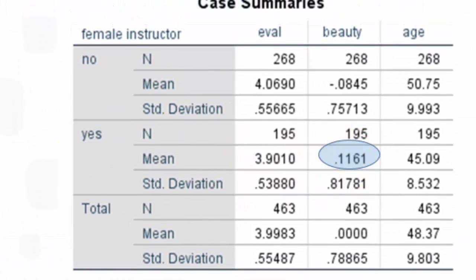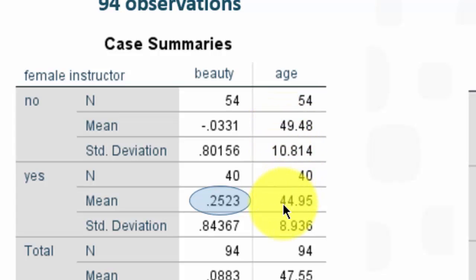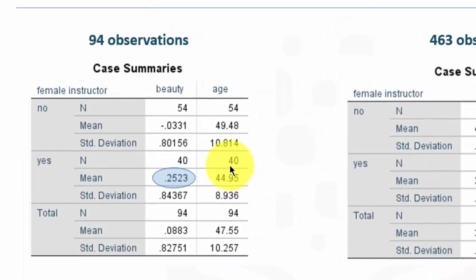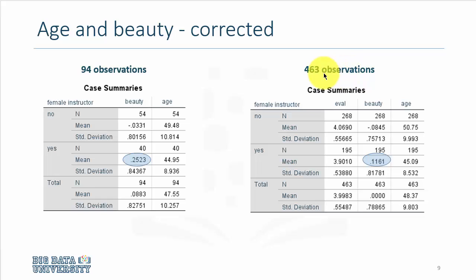Comparing age: the average age using 94 observations for males is 49.4 and for females is 44.9. For age, we don't see much difference whether we use 463 observations or 94, but we certainly see much difference in the beauty scores if we use the wrong data set where individuals are repeated multiple times.